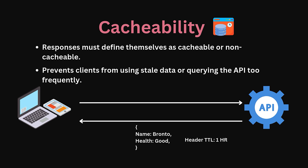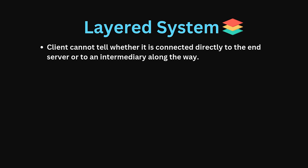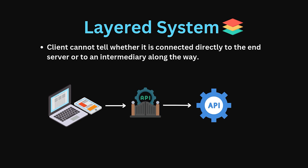Finally, layered system. A client cannot ordinarily tell whether it is connected directly to the end server or to an intermediary along the way. The client might connect to an API gateway that handles authentication and then connects to the actual pet API server. The client doesn't need to know about these layers — it simply makes a request to what appears to be a single endpoint. So if your API meets these requirements, then it is a RESTful API.